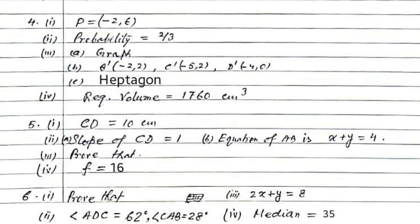Let us look at the last question. The first part is a prove that question. The second one: angle ADC will be 62 degrees and the second B part will be 28 degrees. The third one is 2X plus Y equals 8. And the last question, the fourth part of the sixth question: median is equal to 35.